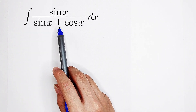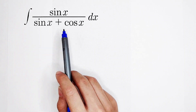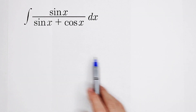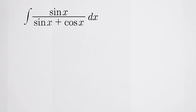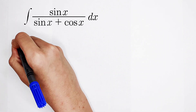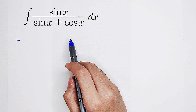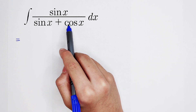What's on the numerator? It's sine of x, and on the denominator is sine of x plus cosine of x. Now I multiply cosine of x minus sine of x on the numerator and on the denominator.